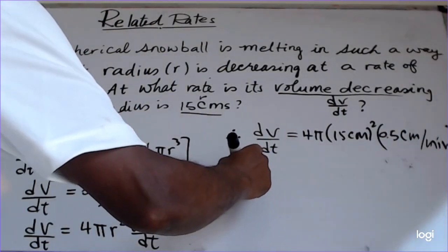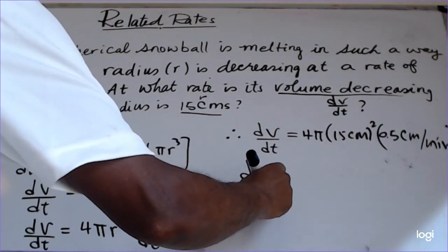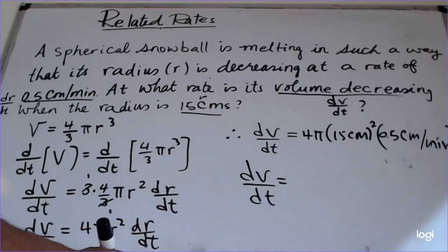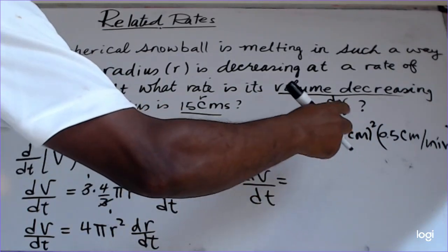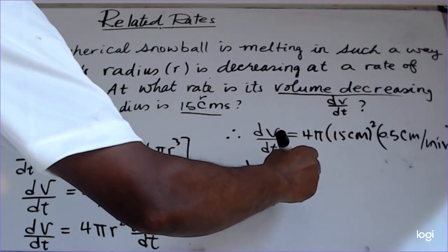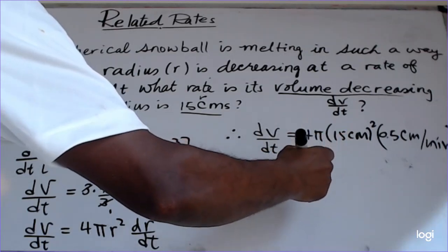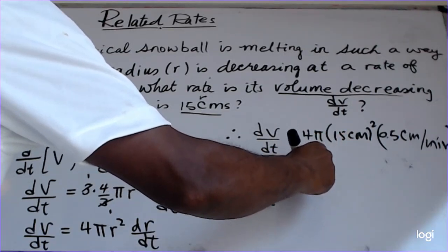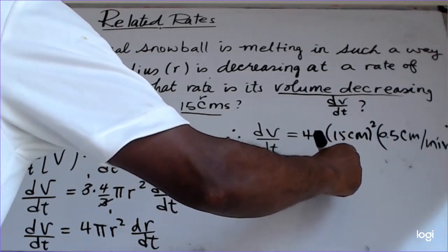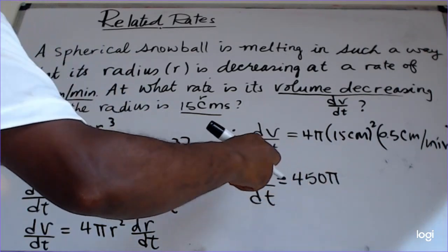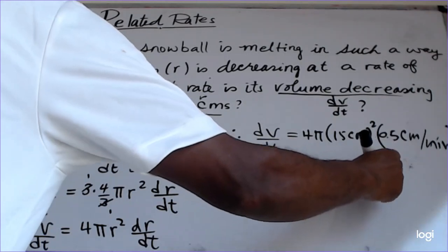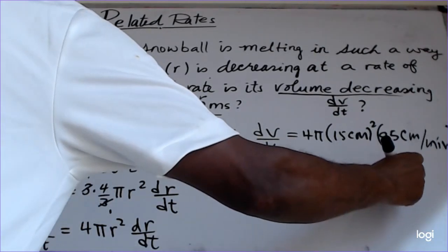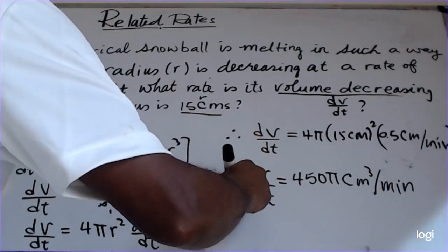So therefore dV/dt equals: 15 squared is 225; 4 times 0.5, or 4 times one-half, is 2; so 2 times 225 is 450. You can leave the π as it is. The units are centimeters squared times centimeters, which is cubic centimeters, so the answer is 450π cubic centimeters per minute.